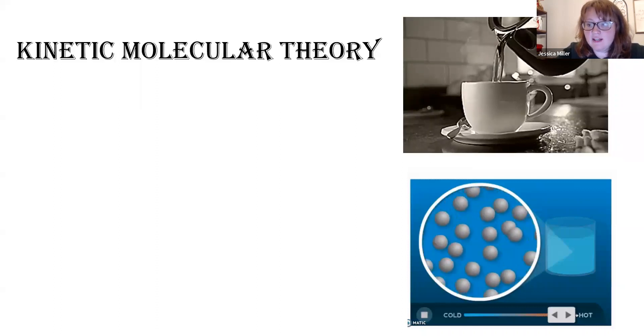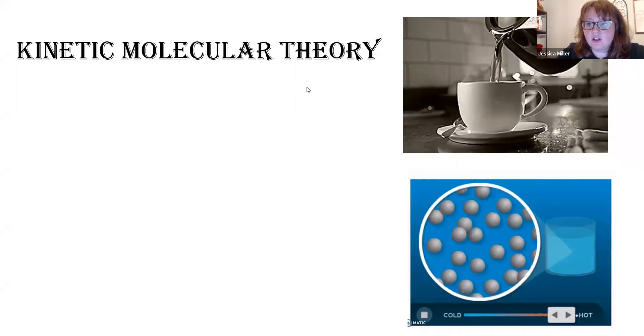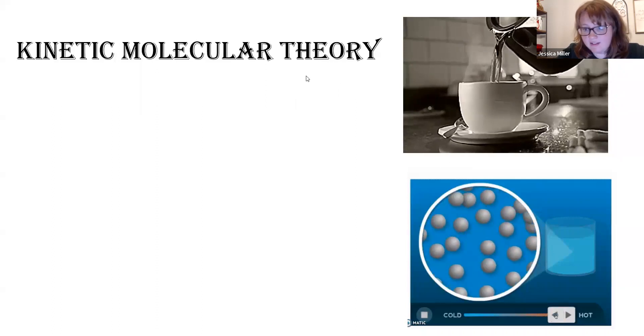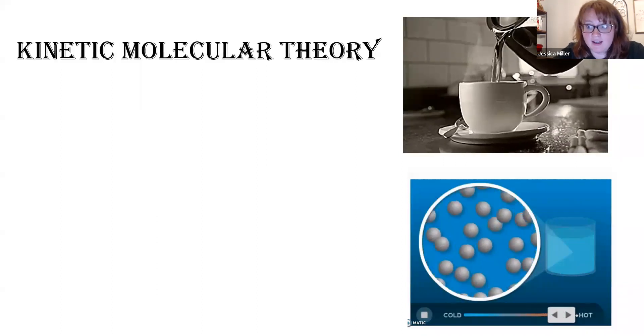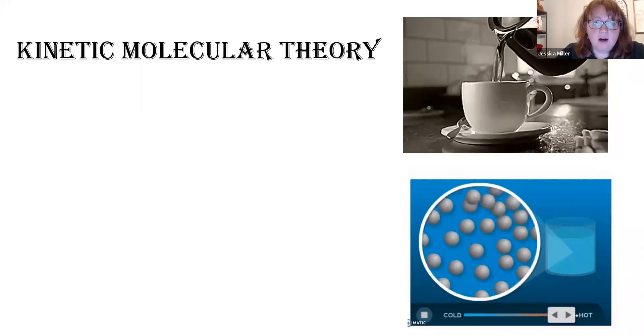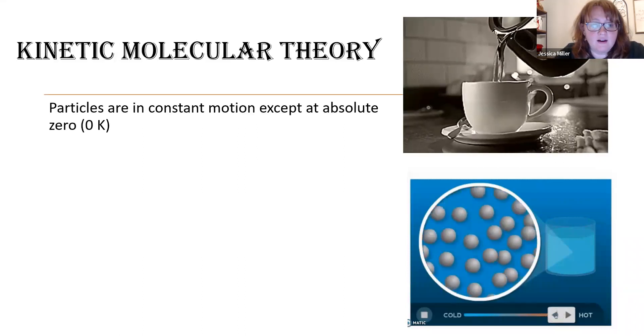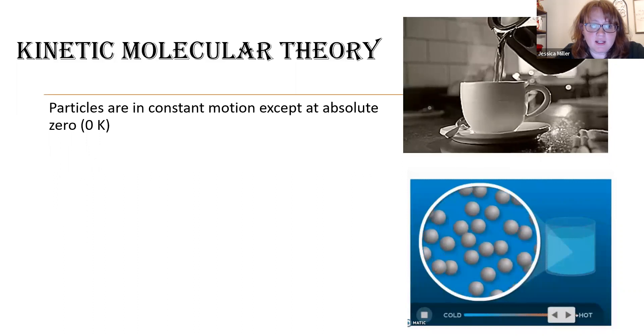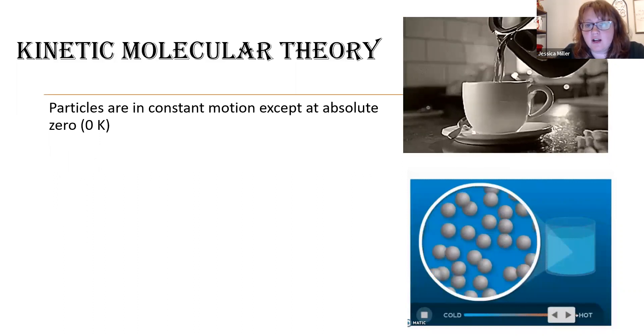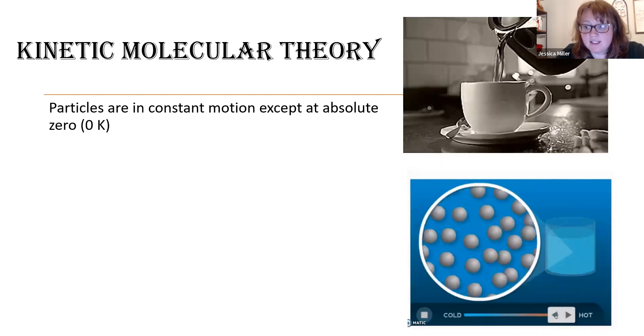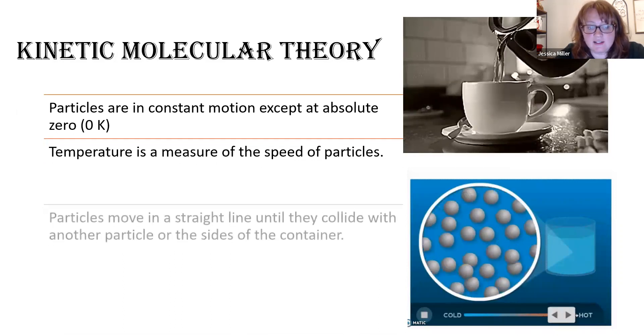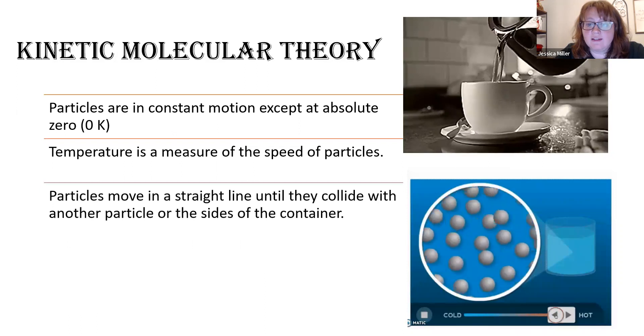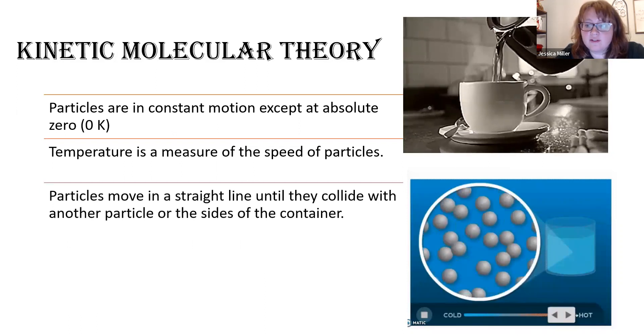Okay. The last thing we're going to look at is called the kinetic molecular theory. First of all, I have this cup of coffee here, because we're going to do quite a few examples of a hot cup of coffee. So there are five parts to the kinetic molecular theory. The first one is that particles are in constant motion, except at absolute zero, and that is zero Kelvin. Temperature is a measure of speed of particles. We've already discussed this.